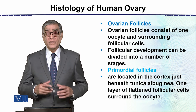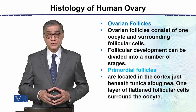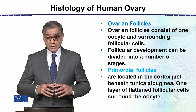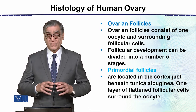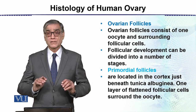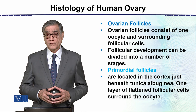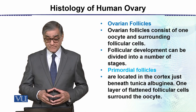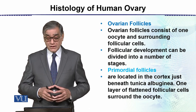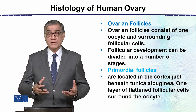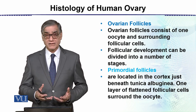The ovarian follicles consist of one oocyte and surrounding follicular cells. Follicular development can be divided into a number of stages. The first stage is the primordial follicle.